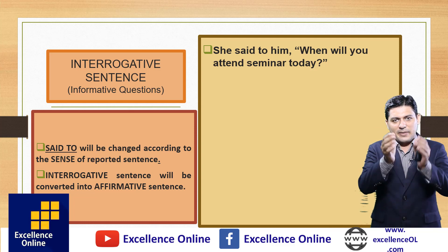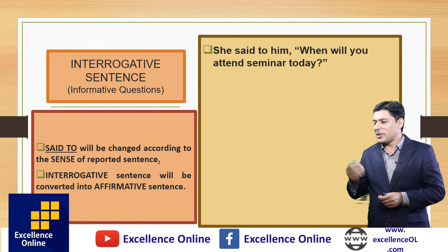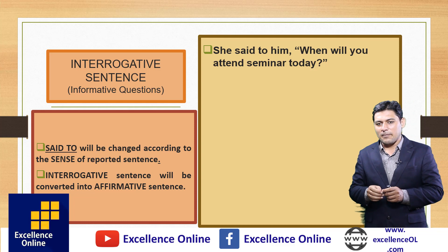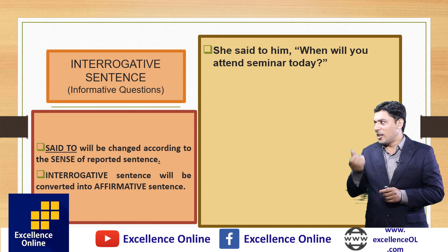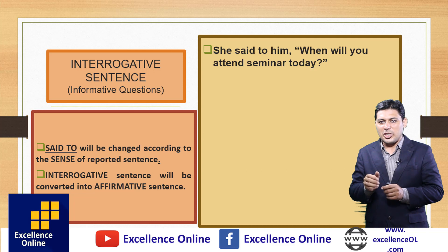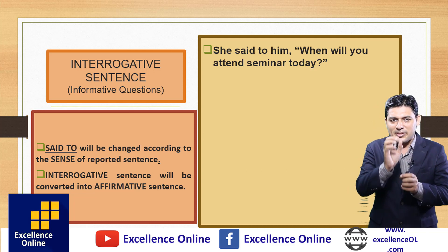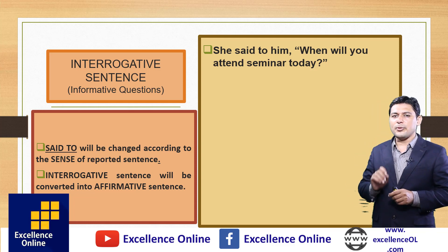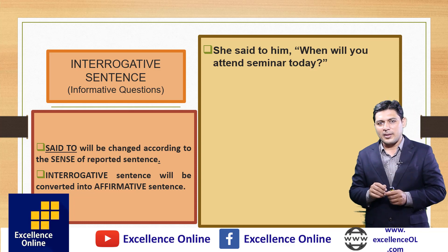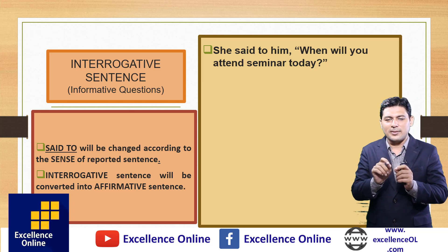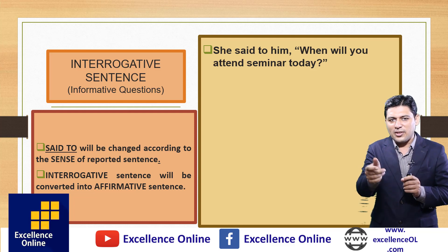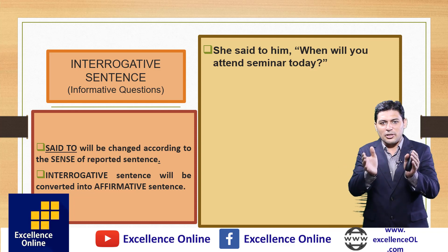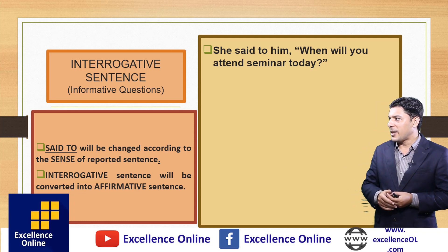The WH word does not change; it stays in the same position as a conjunction. The interrogative sentence then converts to affirmative order. 'You' as subject changes according to the object, becoming 'he.' So 'she said to him, when will you attend seminar today?' becomes 'she asked him when he would attend seminar that day.'